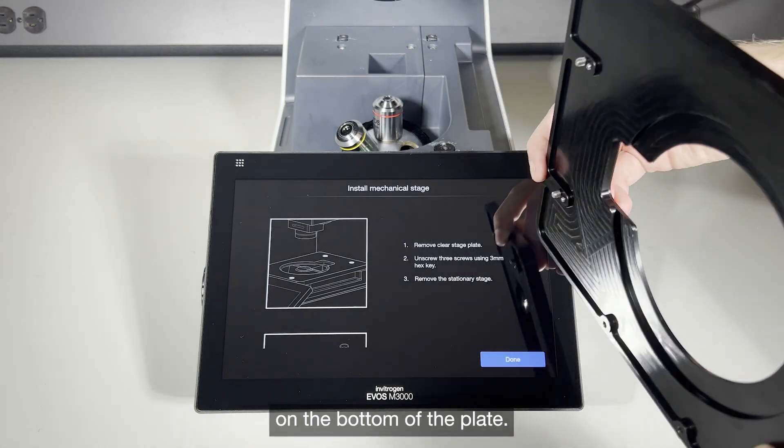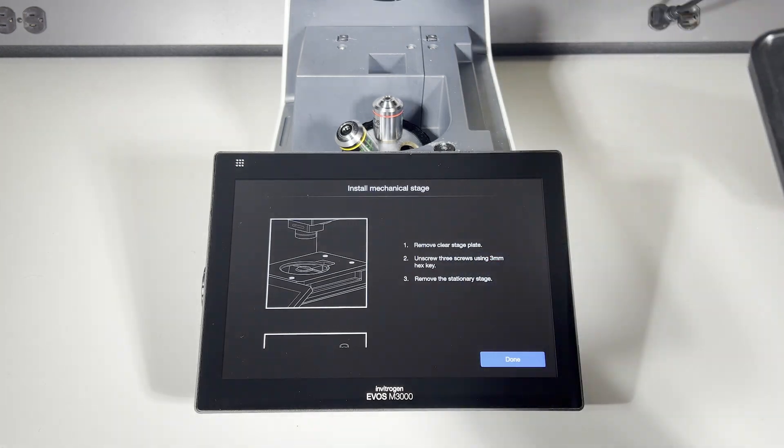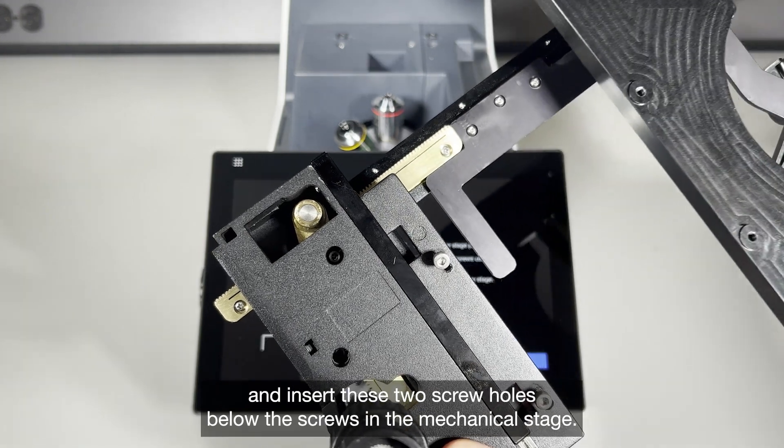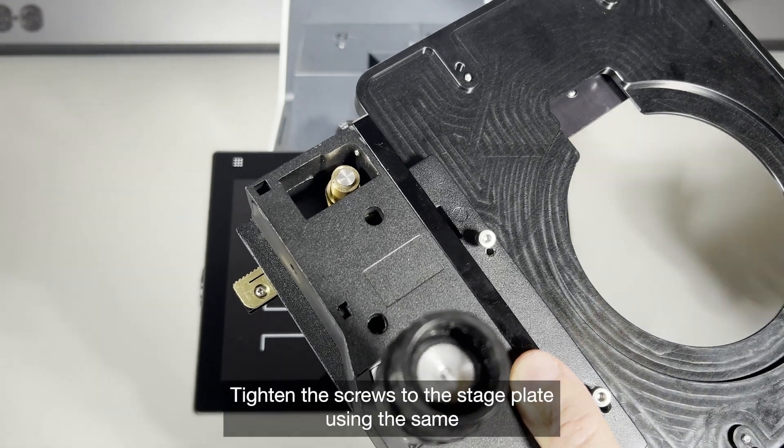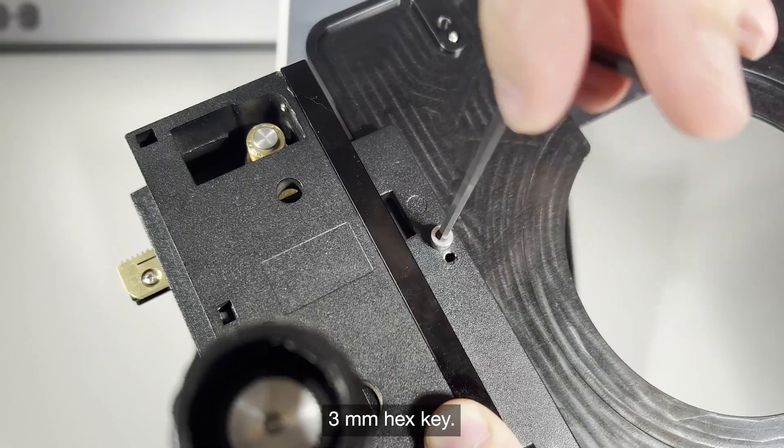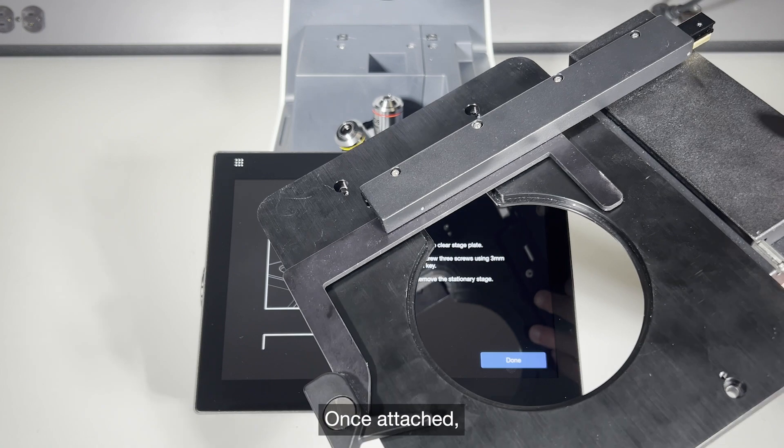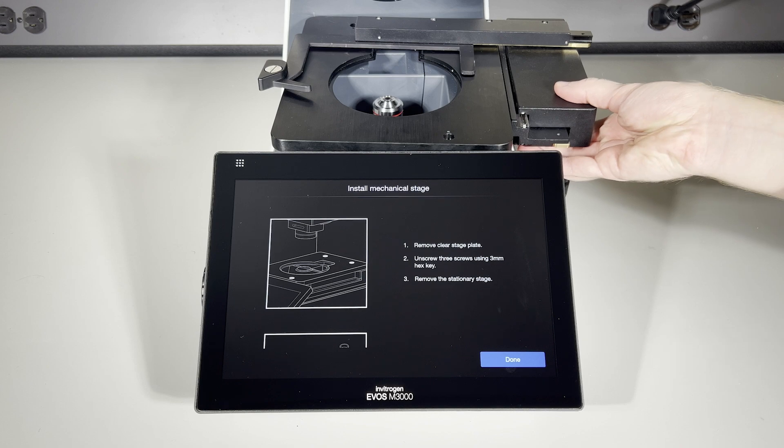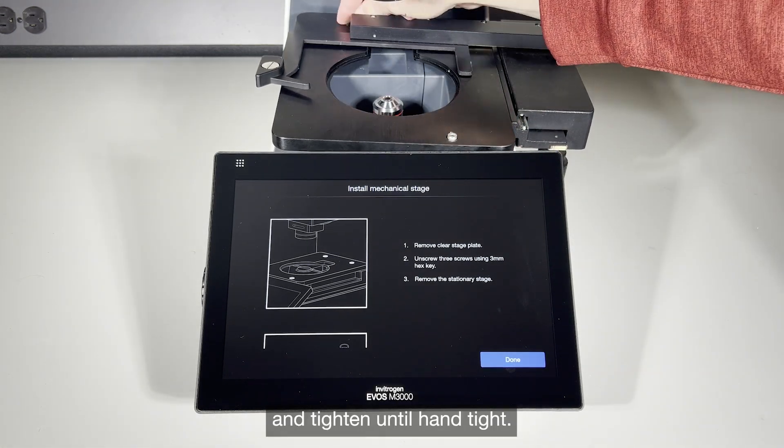Locate the two new screw holes on the bottom of the plate. Retrieve the mechanical stage and insert these two screw holes below the screws in the mechanical stage. Tighten the screws to the stage plate using the same 3mm hex key. Once attached, place the stage plate back on the system in its original orientation. Replace the three screws you removed at the beginning and tighten until hand tight.